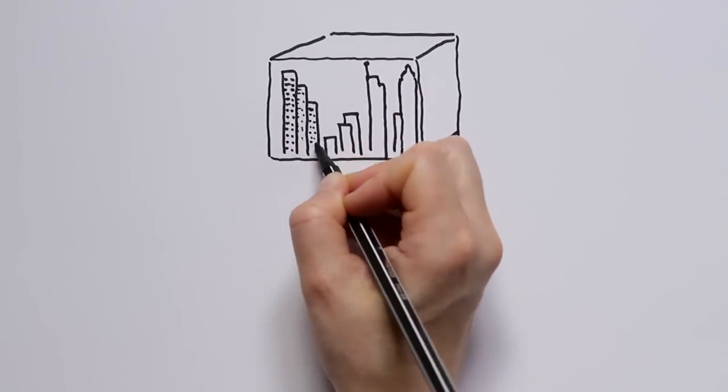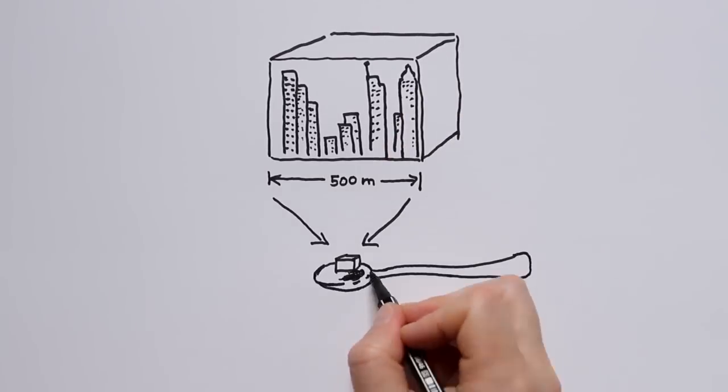There, a cube of iron with edges of 500 meters in length would shrink to the size of a sugar cube.